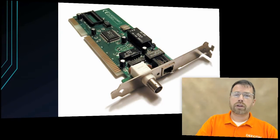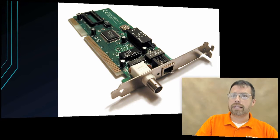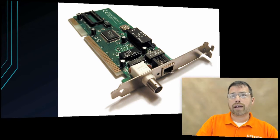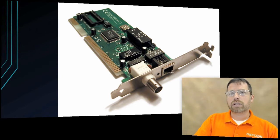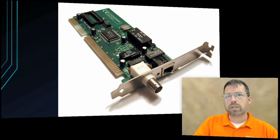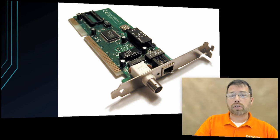Another device here also has an RJ45 jack on it — it is still a NIC card — but we have this weird-looking barrel connector on it. This is called a BNC connector. In older networks, you probably had some coaxial cable. Coaxial cable is thicker; it's more like what you see on your cable modems in today's world. We really don't have that in networks today unless maybe you're doing some TV broadcasting or something along those lines.